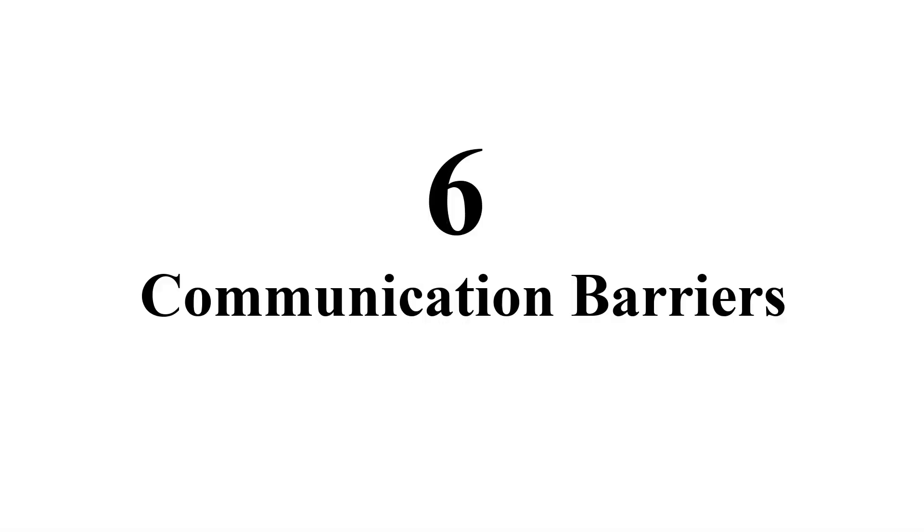The sixth and last barrier is the physiological barrier. The physiological barrier arises when a sender or receiver of the communication is not in a position to express or receive the message with clarity due to some physiological issues, like dyslexia or nerve disorders that interfere with the speech or hearing ability of a person. So these are the six important barriers in communication, which include semantic, organizational, physiological, psychological, cultural, and physical barriers.